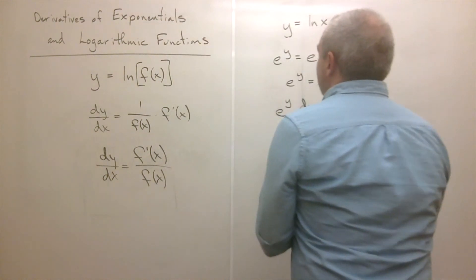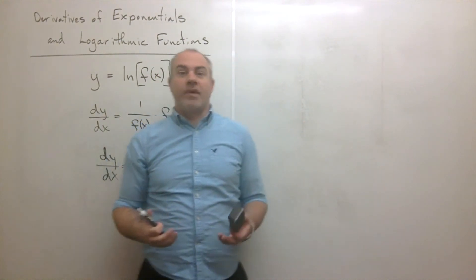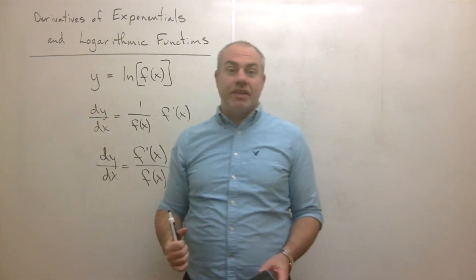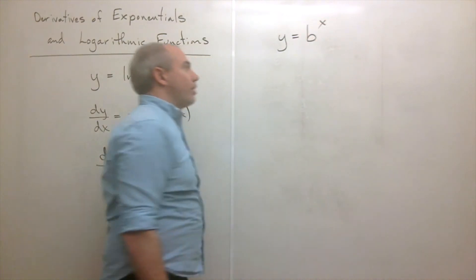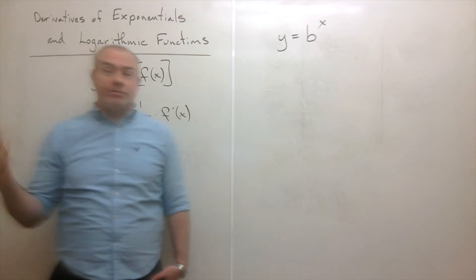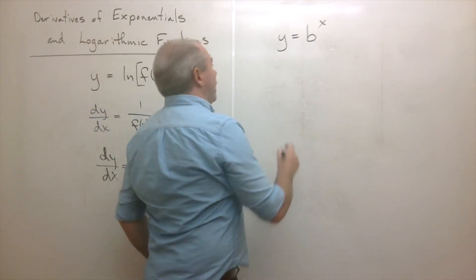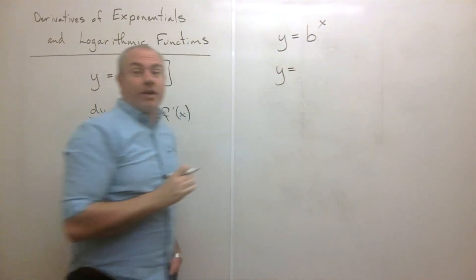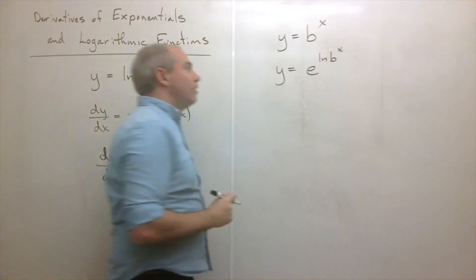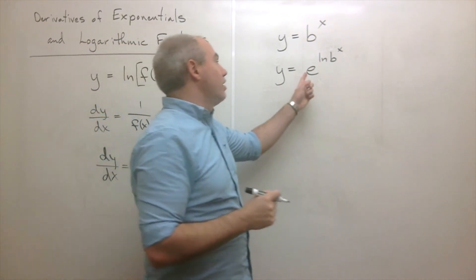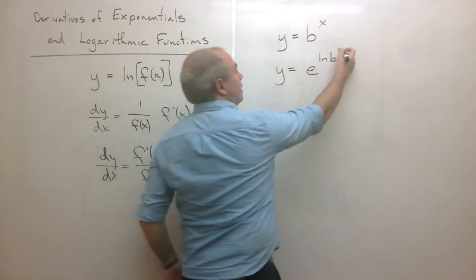What if the base of the exponential or the logarithm is not e? In both previous cases the base was e — what if it's something else, like b, which could be 3, 7, or 10? Well, it's all a matter of rewriting things. B to the x can be written as e to the ln of b to the x, since e and ln are inverse functions of each other. So e to the ln of b to the x is just b to the x — it's just a new way of writing it.